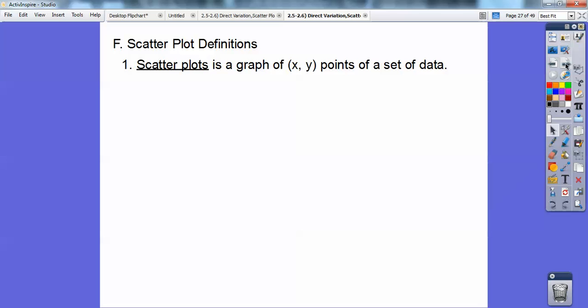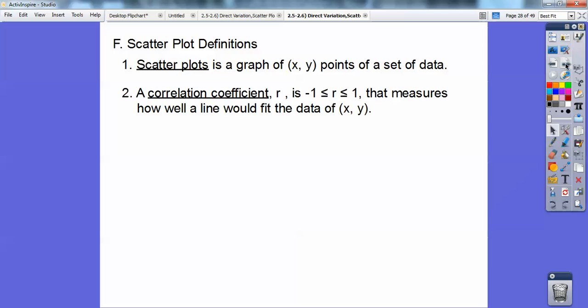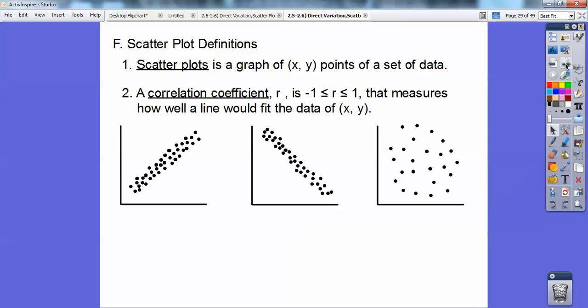So scatter plot definitions. A scatter plot is a graph of X, Y points that's on set of data. So a correlation coefficient, which is R, it measures how well a line would fit the data. And the closer R is to one or negative one, then the closer that'll fit the data.